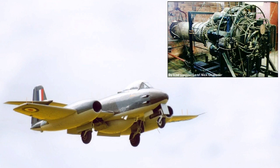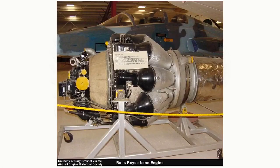Rolls-Royce reworked the Whittle design to produce the Derwent engine, an example of which is depicted here. This engine was capable, in its Mark IV version, of producing 2,450 pounds of thrust. Later versions of the engine, capable of 3,600 pounds of thrust, were used to power the Gloster Meteor F8, like the one shown here, flying at an open day at Royal Air Force Kemble in the year 2000. During a visit to the United States in early 1944, the leader of the Rolls-Royce design team found that General Electric were developing engines capable of producing up to 4,000 pounds of thrust. As a response, he initiated a project which culminated in the Nene engine, which at the time was the most powerful engine in the world, with 5,000 pounds of thrust.